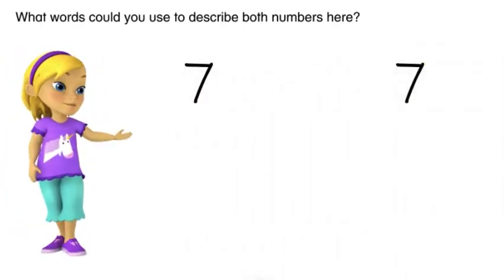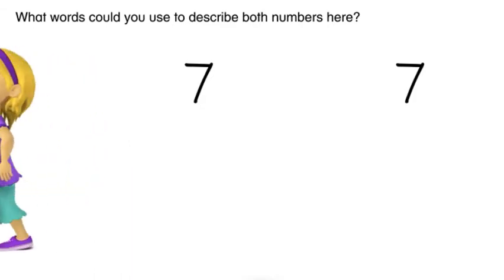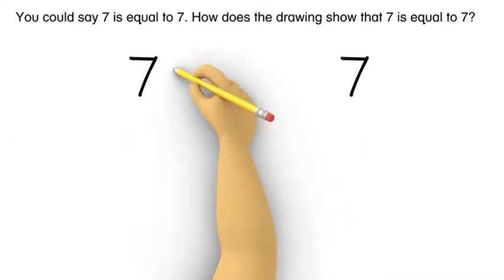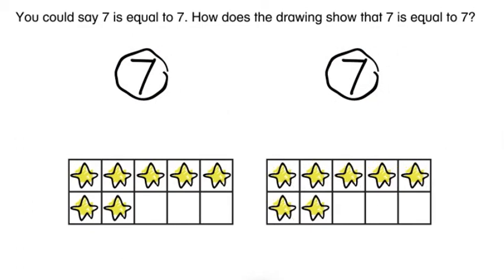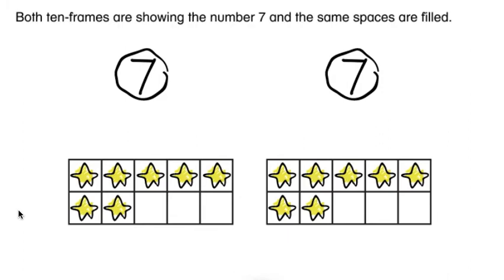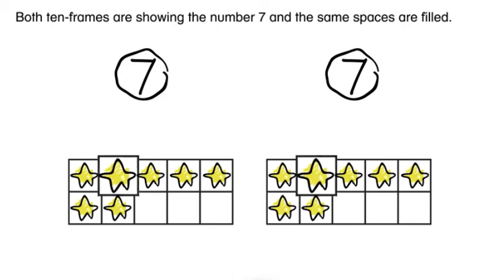What words could you use to describe both numbers here? You could say seven is equal to seven. How does the drawing show that seven is equal to seven? Both ten frames are showing the number seven and the same spaces are filled.